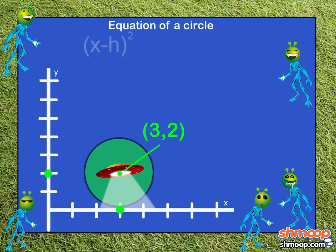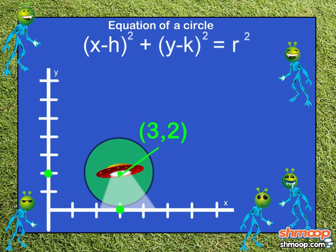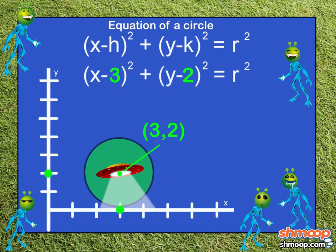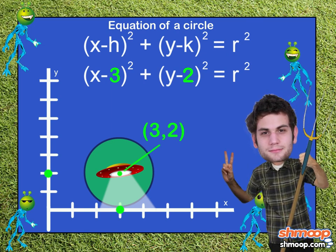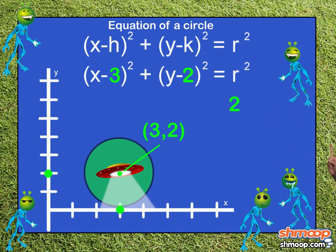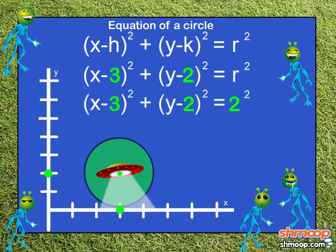The equation of a circle is x minus h squared plus y minus k squared equals r squared. Since point (3, 2) is the circle's center, we substitute 3 as h and 2 as k to get x minus 3 squared plus y minus 2 squared equals r squared. Since Farmer Pete can live with circles of radius 2, we substitute 2 in for r. So the final equation is x minus 3 squared plus y minus 2 squared equals 4.